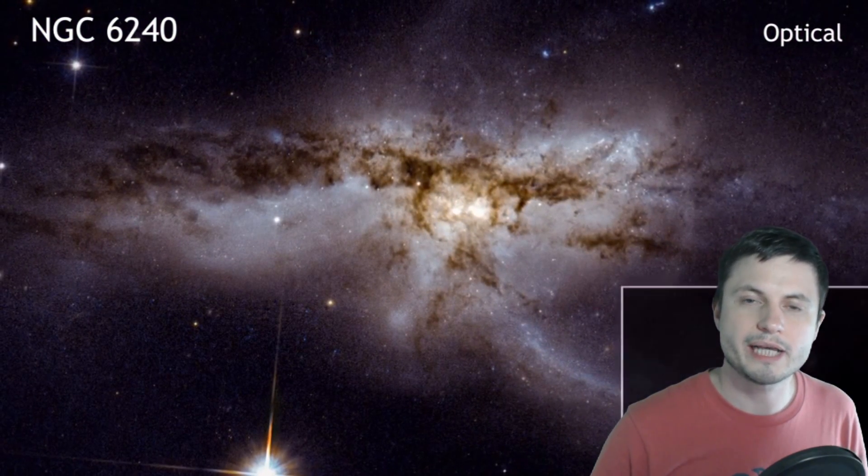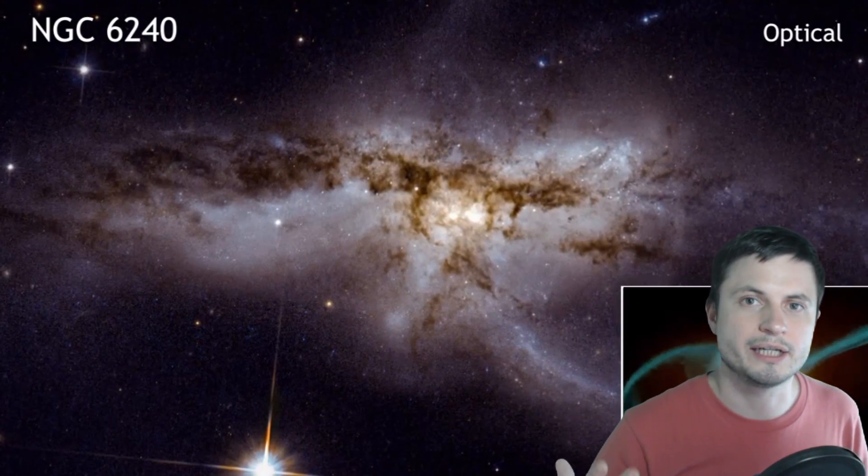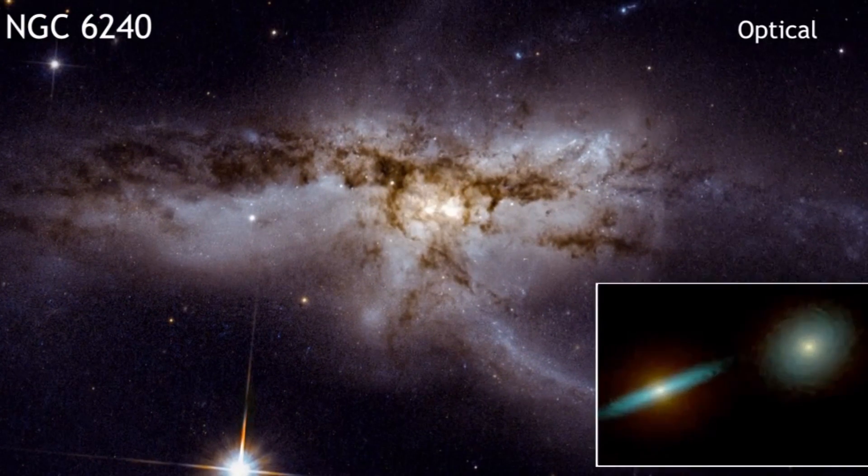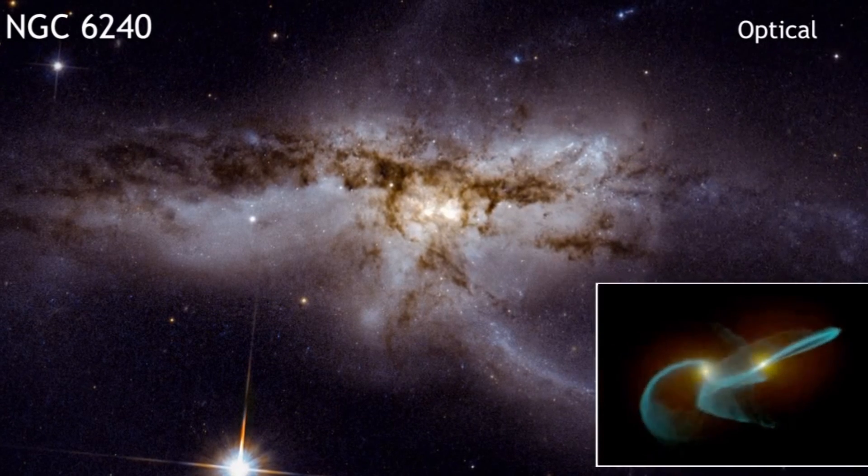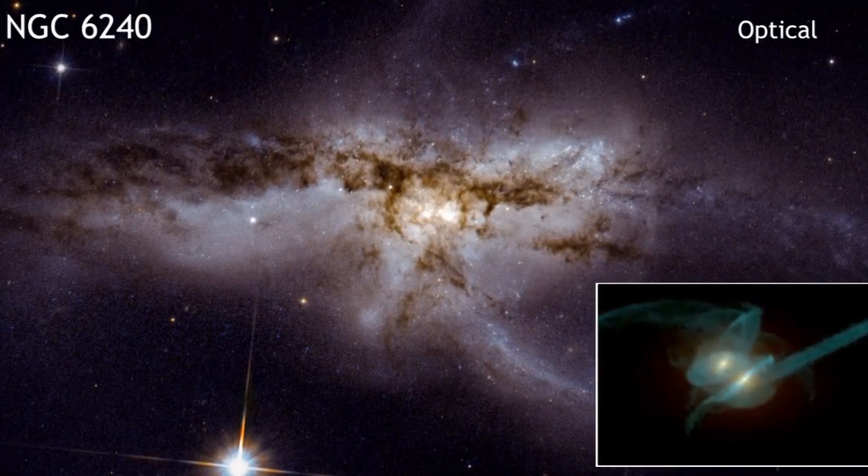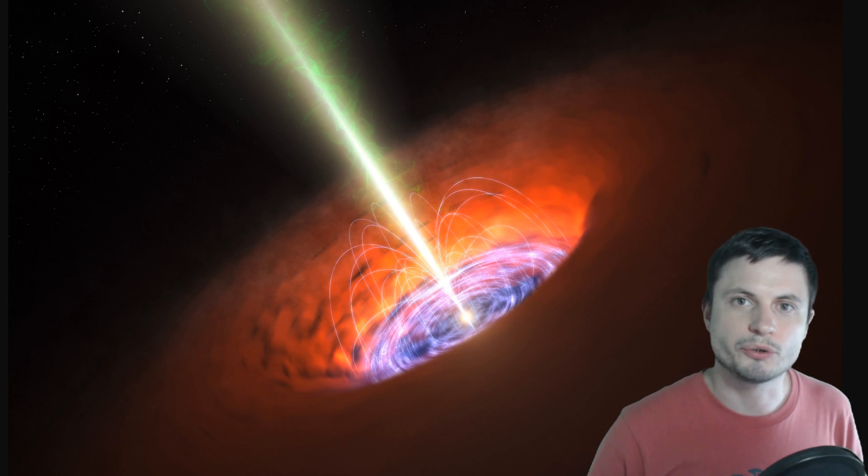Because the three galaxies, Andromeda, Milky Way, and the always forgotten Triangulum galaxy, the third largest galaxy nearby, will all collide and create one massive irregular galaxy, while also probably turning the Milky Way into an extremely active quasar.